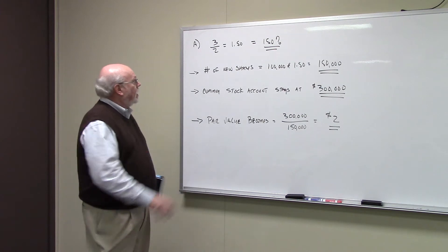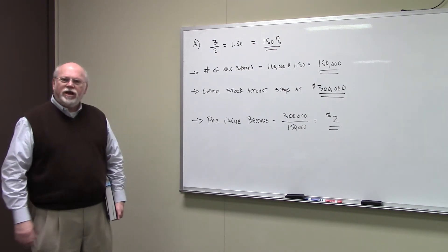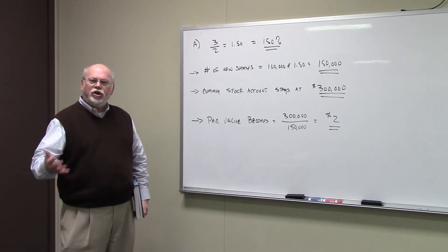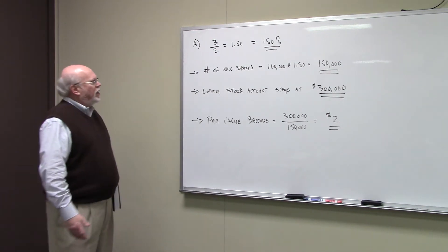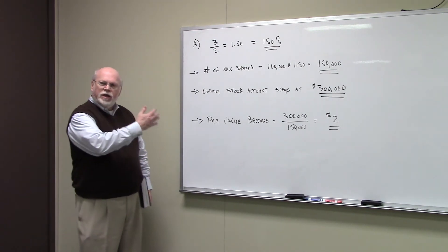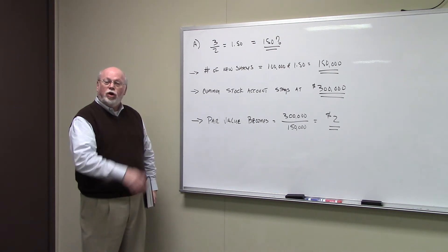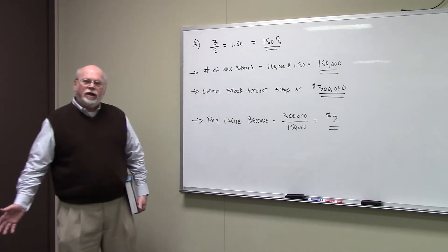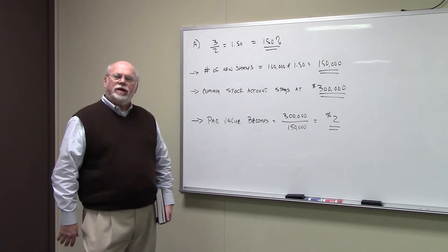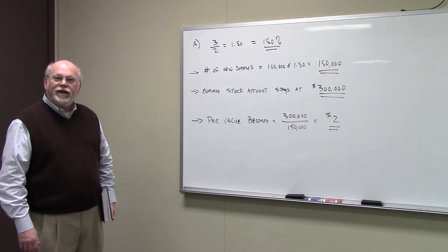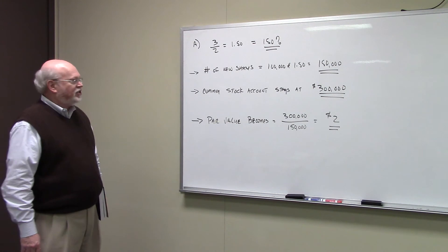And first of all, how many additional shares are you going to have? What's going to be the increase? Well, a three-for-two stock split, three divided by two, is 1.5 or 150%. So you're going to have 150% of the shares, a 50% increase in the number of shares outstanding.